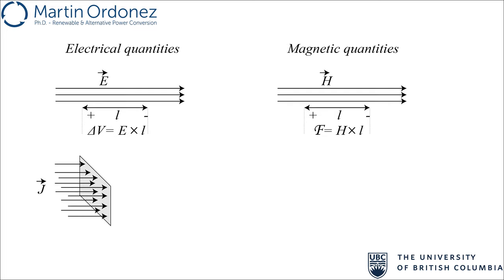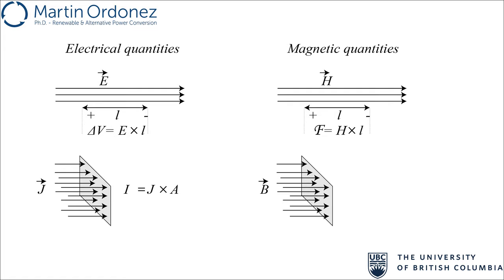Another quantity in the electric domain is the current density, called J. For a uniform and constant J passing through a surface with area A, the total current I is equal to J times the surface area. The equivalent of J in magnetic domain is B, called magnetic flux density. For a uniform and constant B passing through a surface with area A, the total magnetic flux is equal to B times A.